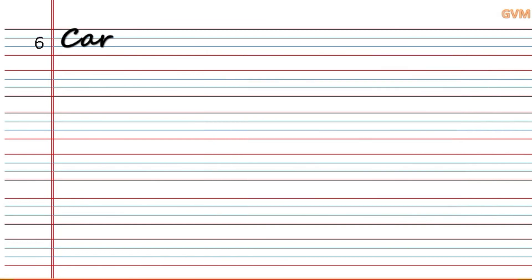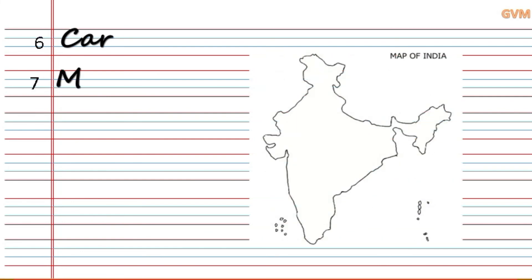Number seven is M-A-P, map. This is a map picture.